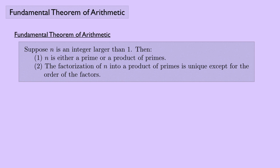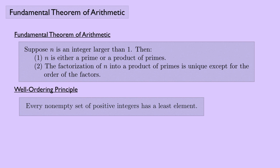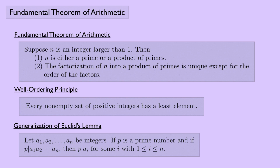In order to prove the fundamental theorem of arithmetic, we're going to need the well-ordering principle, which says that every non-empty set of positive integers has a least element. And we're also going to need a generalization of Euclid's Lemma, which says if a1, a2, all the way up to an are integers, and if p is a prime number and p divides the product of those integers, then p has to divide one of those integers for some i, where i is between 1 and n.